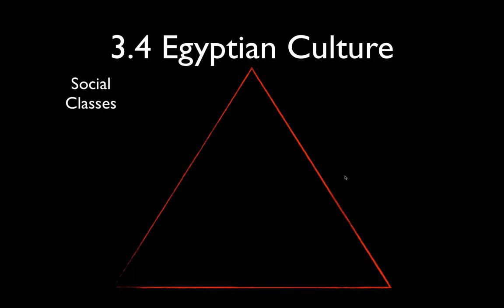The Egyptian culture was divided up into a giant pyramid. At the very top were the pharaohs — a very small piece of the pyramid, because you can only have one pharaoh at a time.